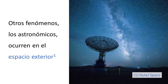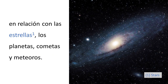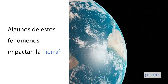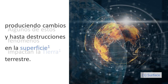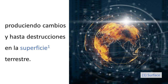Otros fenómenos, los astronómicos, ocurren en el espacio exterior en relación con las estrellas, los planetas, cometas y meteoros. Algunos de estos fenómenos impactan la Tierra, produciendo cambios y hasta destrucciones en la superficie terrestre.